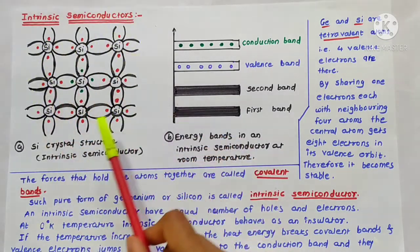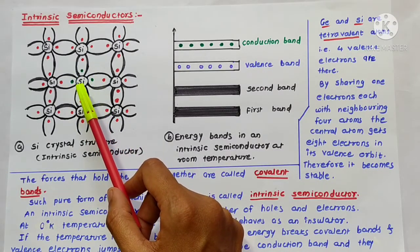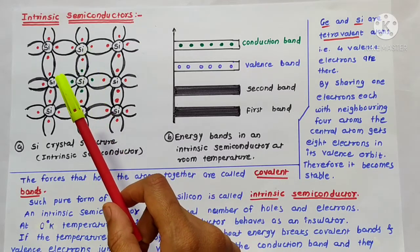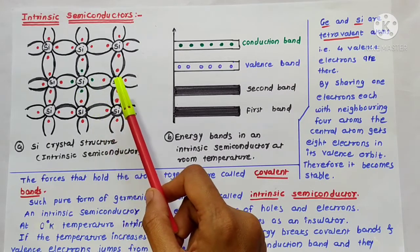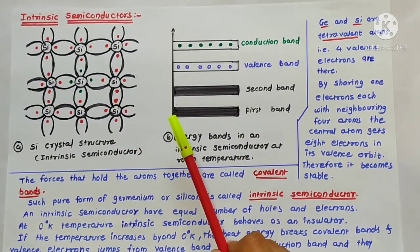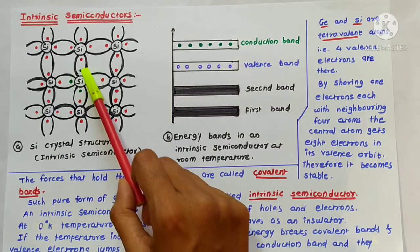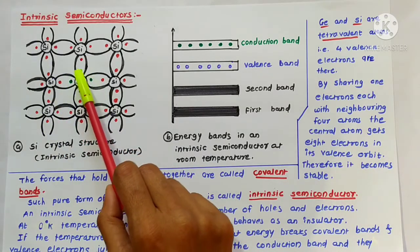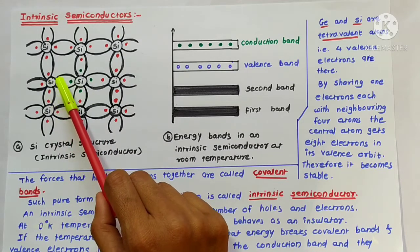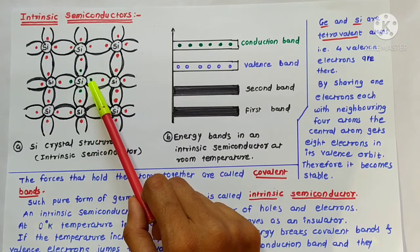This is the crystal structure of silicon. Silicon or germanium has 4 valence electrons. For a stable atom, 8 valence electrons are necessary. So by sharing 1 electron each with neighboring 4 atoms, as you can see in this diagram, this central atom gets 8 electrons in its valence orbit.